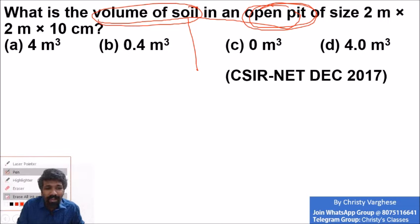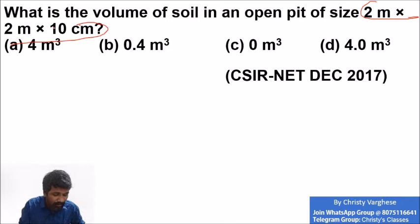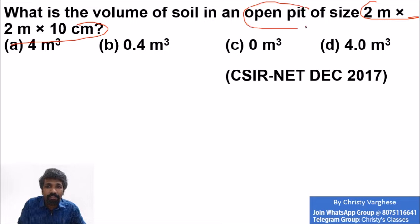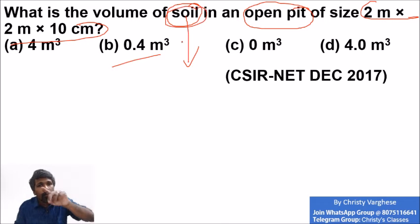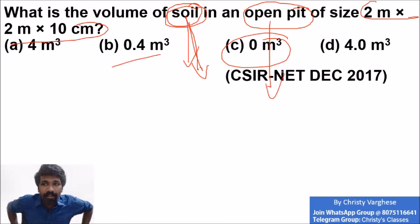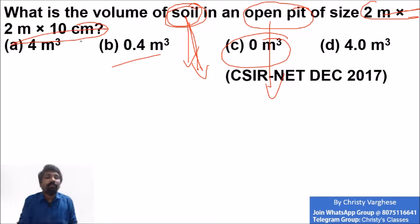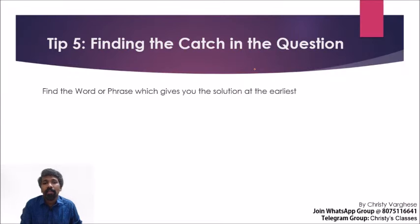The amount of soil inside an empty open pit is zero — so the answer is 0 m³. The 2 m, 2 m, and 10 cm dimensions are all irrelevant data designed to divert you from the real point. The catch in the question is: it is an open pit, and the question is asking about soil — not the volume of the pit itself. Identifying the catch lets you solve the question immediately.